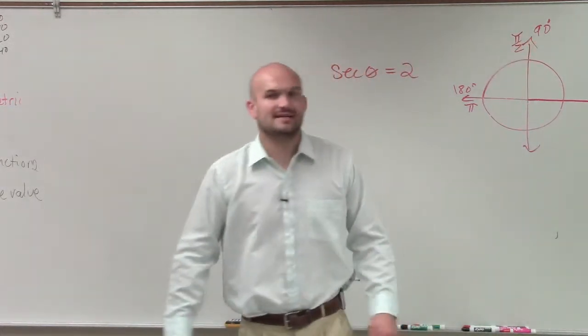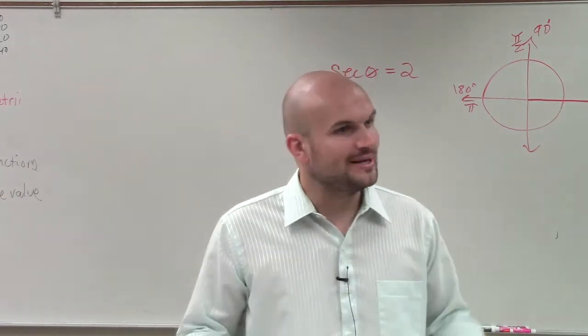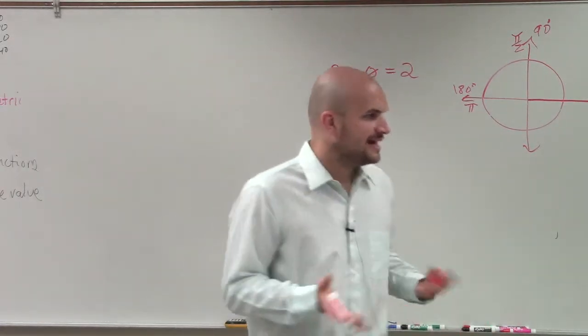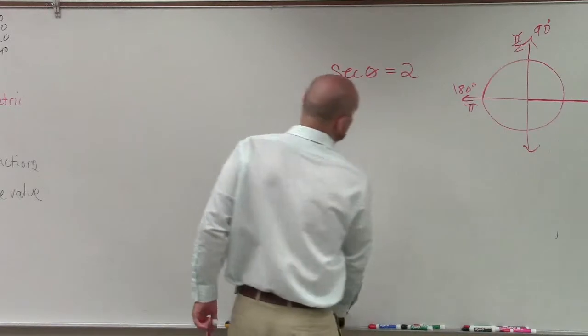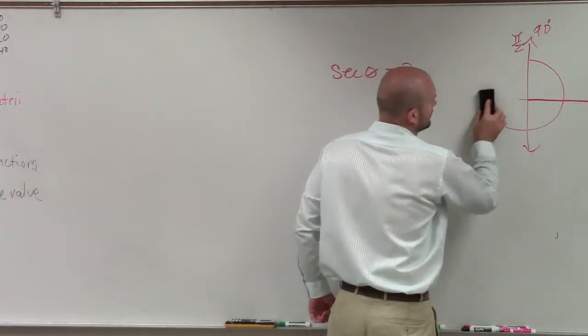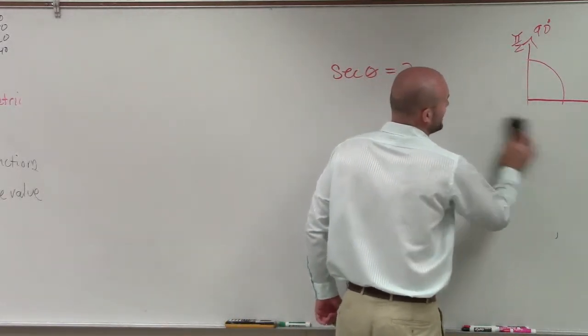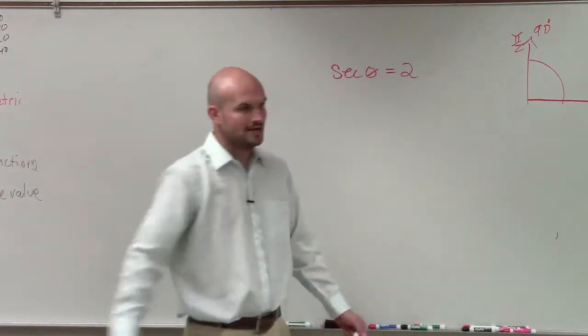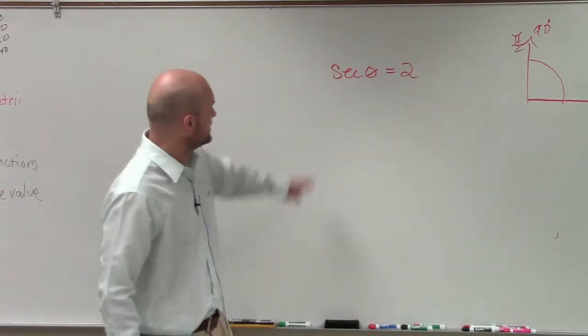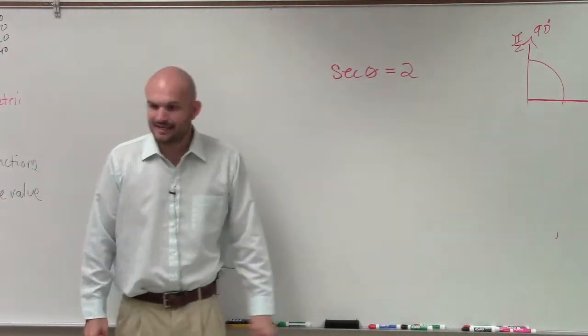So what they're asking us is find the angle that is between 0 and 90 degrees and 0 and π/2. So all we're concerned about is finding the angle. That's what we call the first quadrant. So they're asking us, secant of theta equals 2.